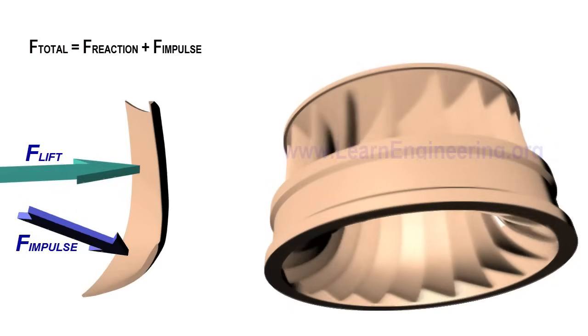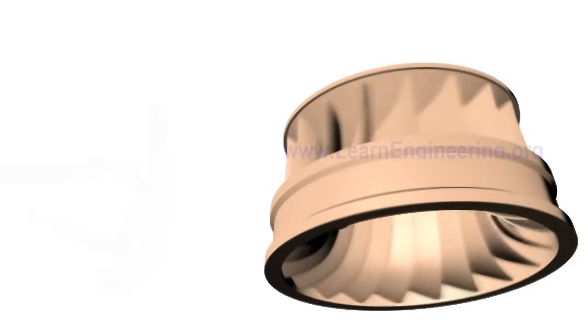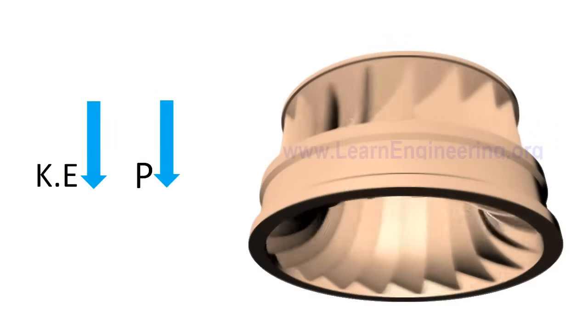Thus as water flows over runner blades, both its kinetic and pressure energy will come down. Since flow is entering radially and leaving axially, they are also called mixed flow turbines.